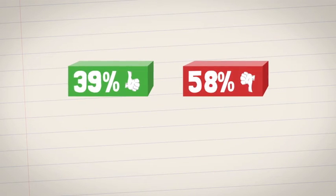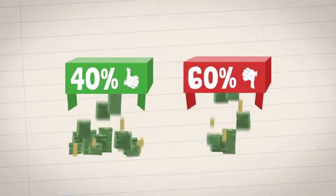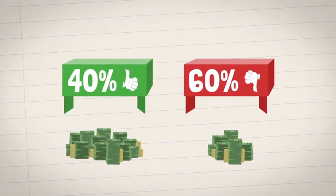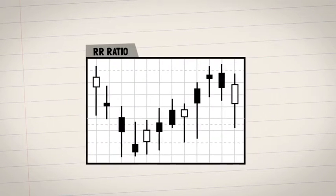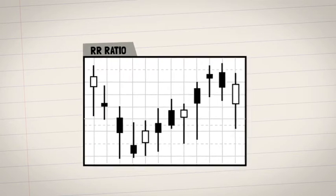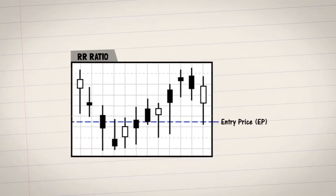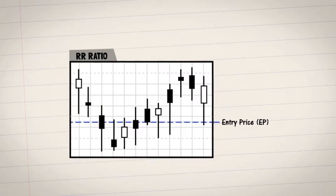So if you only get it right 40% of the time, you want to make sure those trades make way more than all the losing trades. The RR is calculated using three numbers. First, the EP or entry price. This is the price at which you enter the trade.